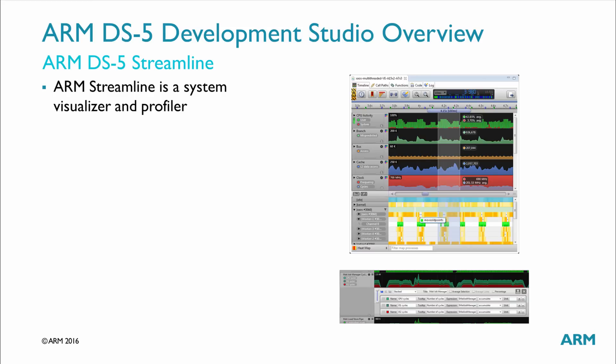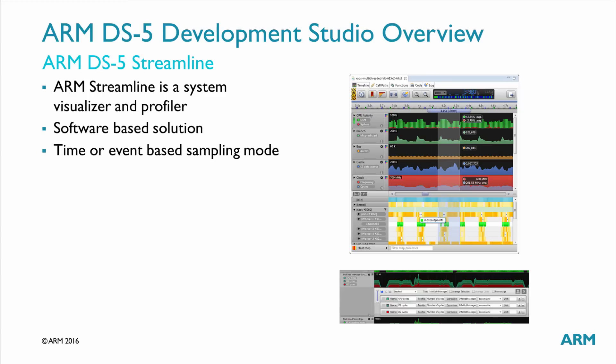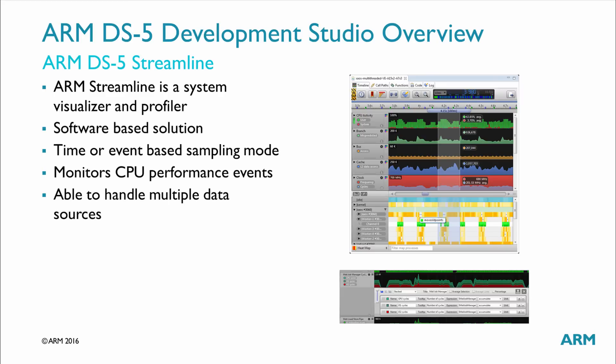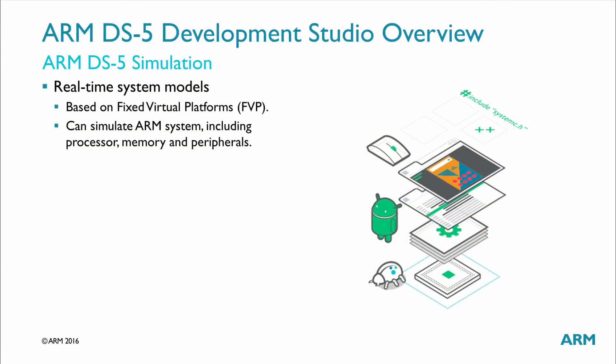The Arm Streamline Performance Analyzer is a system-wide visualizer and profiler for Arm Cortex-A targets running on Linux or Android. It is a software-based solution that does not require trace units. It can be used both in time-based sampling and event-based sampling mode for monitoring CPU performance events such as cache misses and branch mispredictions. Moreover, it can handle multiple data sources such as CPU and GPU hardware and software counters. Arm DS5 incorporates simulation tools for the development of software without the requirement of actual hardware, nor even additional machines to run hardware emulators like in the PV stream approach.